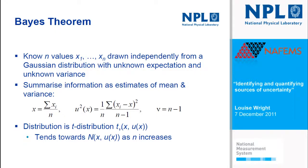Bayes' theorem is useful when you've got a set of realisations of the quantity you're interested in, and you can assume these are independent samples from a Gaussian distribution whose expectation and variance you don't know. Applying Bayes' theorem, you can estimate the mean using the formula on the left, estimate the variance using the formula on the right, and then assume the distribution is a T-distribution of the stated form. You might expect a Gaussian, but because you're estimating both quantities you need to add width — a T-distribution is a better estimator, though it tends towards the normal distribution as the number of samples increases.